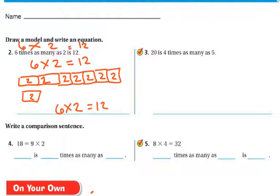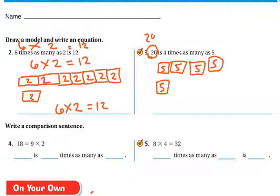20 is 4 times as many 5's. Okay, so if I've got my 5, and 20 is going to be 4 times that. 1, 2, 3, 4. So it's going to be 4 of my 5's. So there's my model. And if I write it, 20, there's my is, 4, and there's my times, 5. And there's my equation.